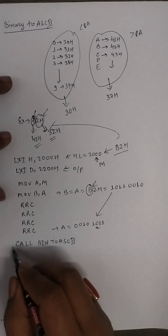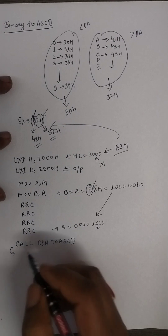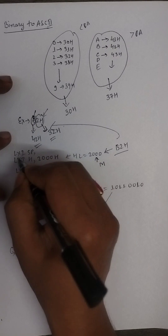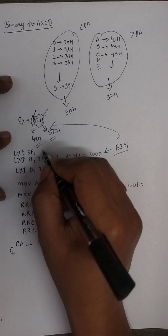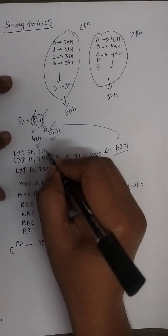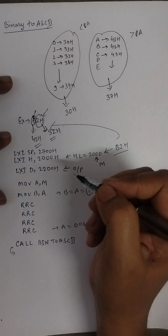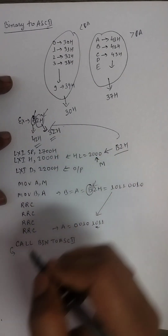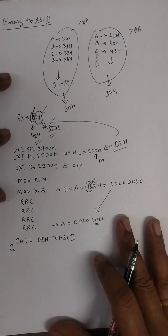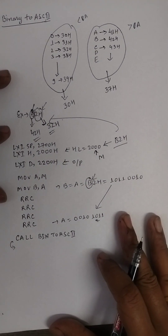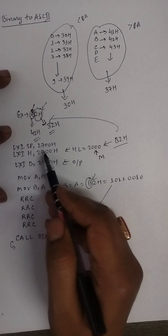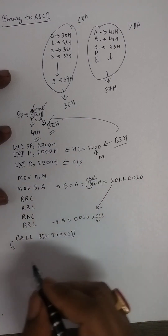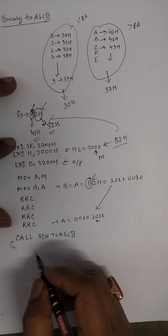When using the CALL instruction for the binary-to-ASCII subroutine, the return address must be stored on the stack, so I need to define the stack pointer. I initialize LXI SP, 2700H to set up the stack pointer value before making the subroutine call.